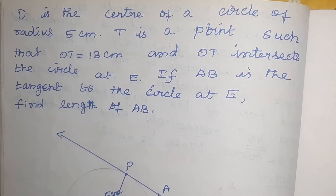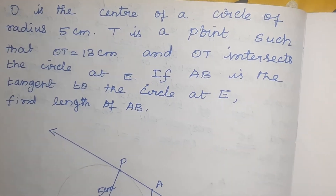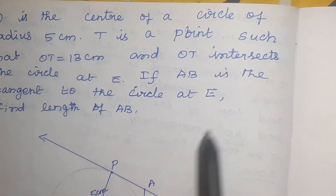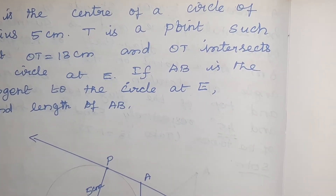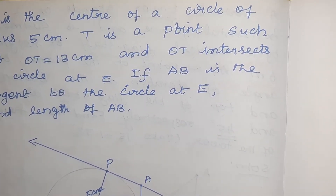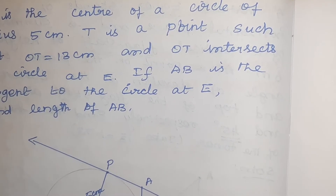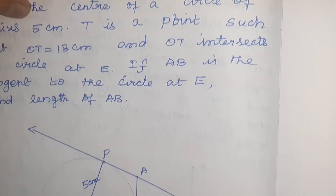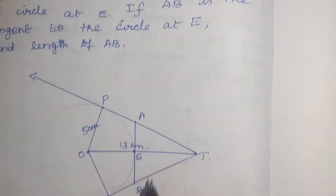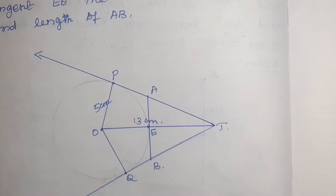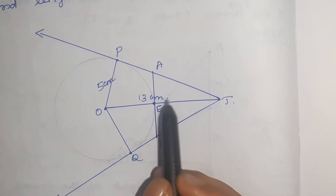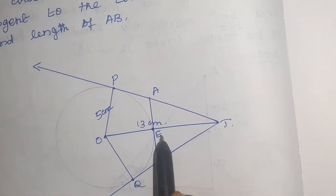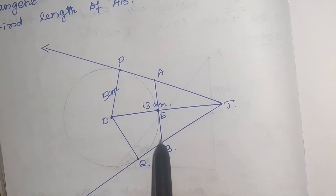Hi, I am Imal Ashwat. Now, I am going to teach for 10th standard. It is an important question in circle. O is the centre of a circle of radius 5 centimetre. T is a point such that OT equal to 13 centimetre. This OT intersects the circle at E. If AB is the tangent to the circle at E, find length of AB.